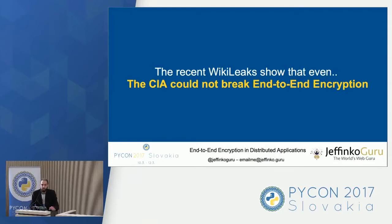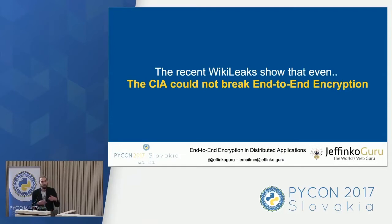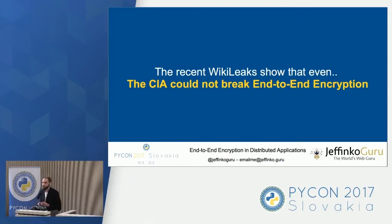Recently WikiLeaks released information that the CIA has been developing malware to try and decrypt these kinds of messages. Even they are not able to decrypt the end-to-end encryption — they are only able to create malware that sits on your phone, computer, or television and uses it as the user. These malwares sit on your phone and act like the user itself, reading messages before they're encrypted. As you're typing into WhatsApp or Signal, they capture it via a keylogger and simply read the message before it's actually encrypted.